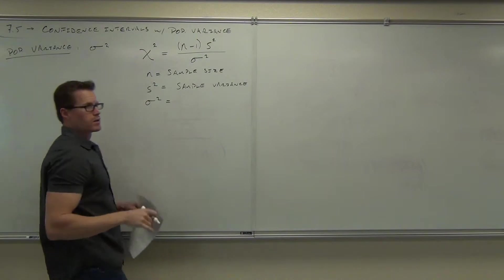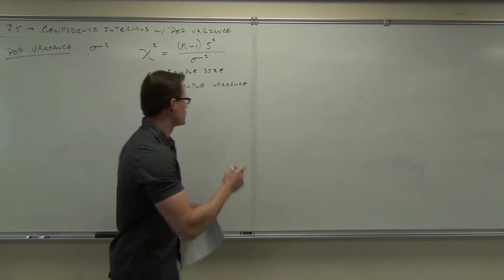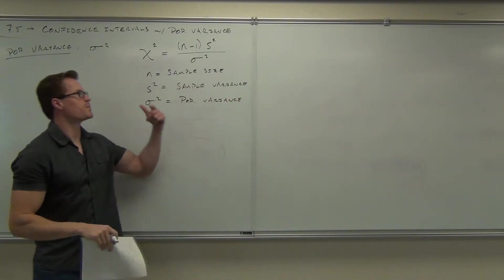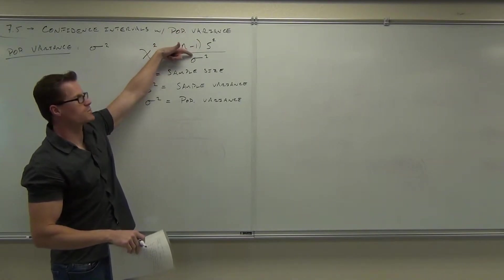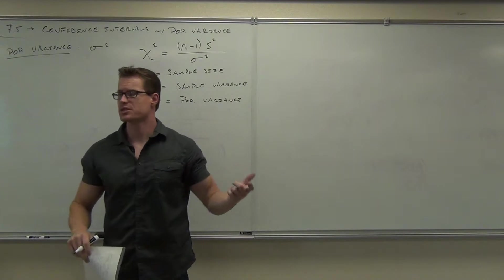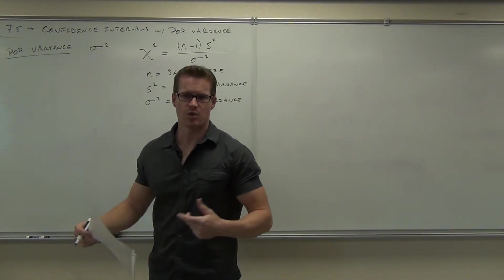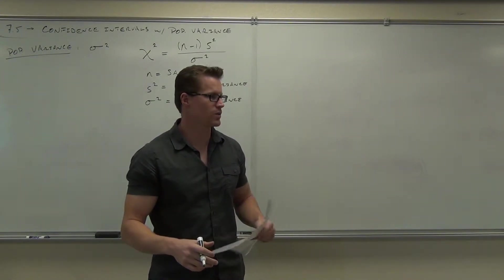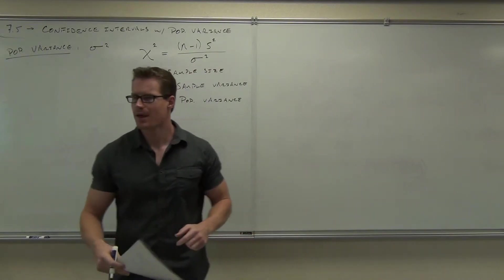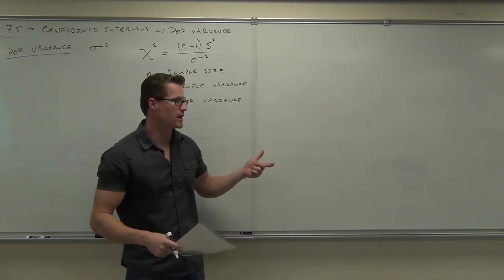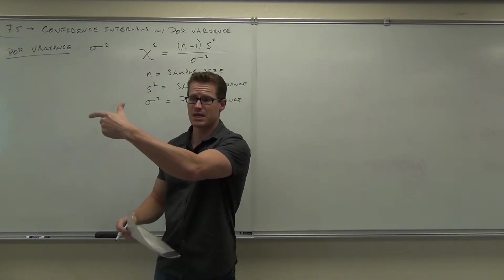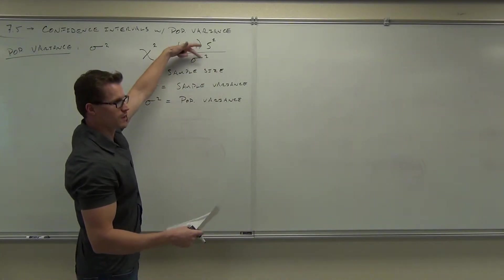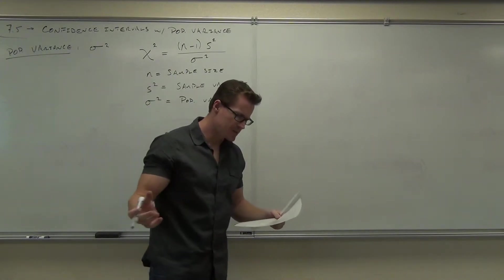And sigma squared, that's population variance. Notice how this compares your sample variance to your population variance. That's really all it does. And it's also based on your sample size. So larger samples have a different reading than smaller samples. That should make sense because the larger our samples, the more accurately we're going to depict our population variance with our sample variance.